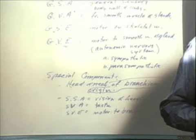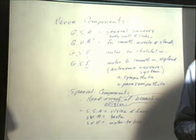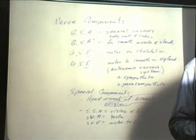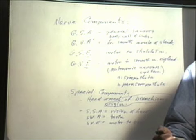With that as an introduction to spinal nerves, the cranial nerves are basically very similar. They can have either the motor component, the sensory component, or they can have both of them — singly or together.